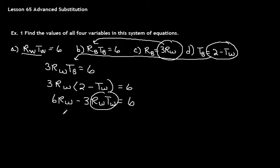As I said, there's not just one way to do this. So 6RW minus 3 times 6 equals 6. And look at that. We have it down to one equation, one unknown.